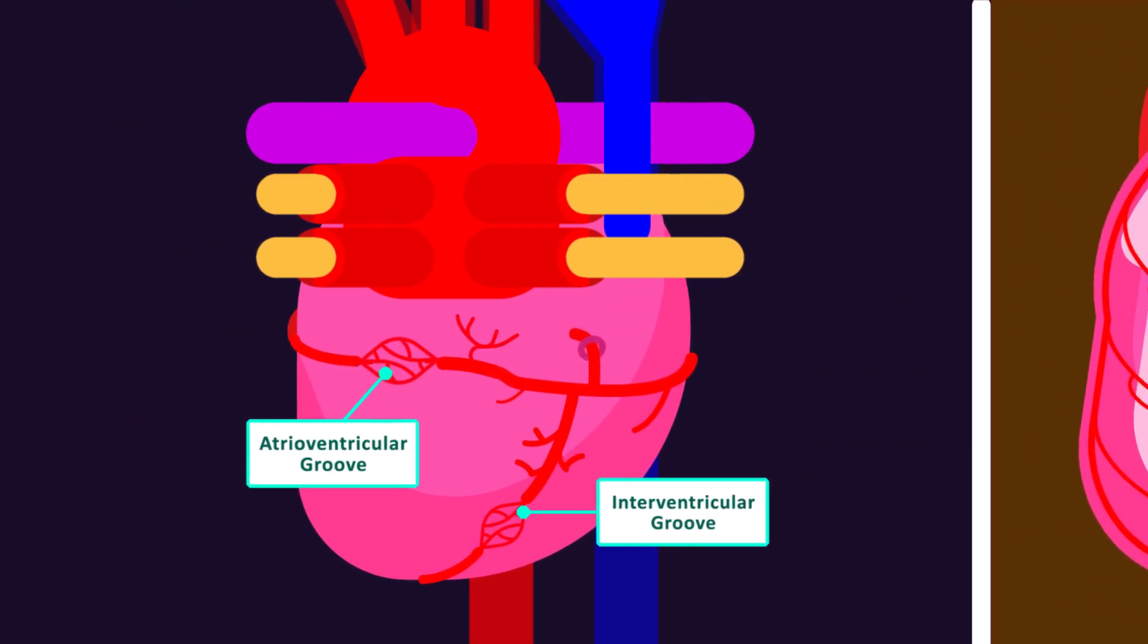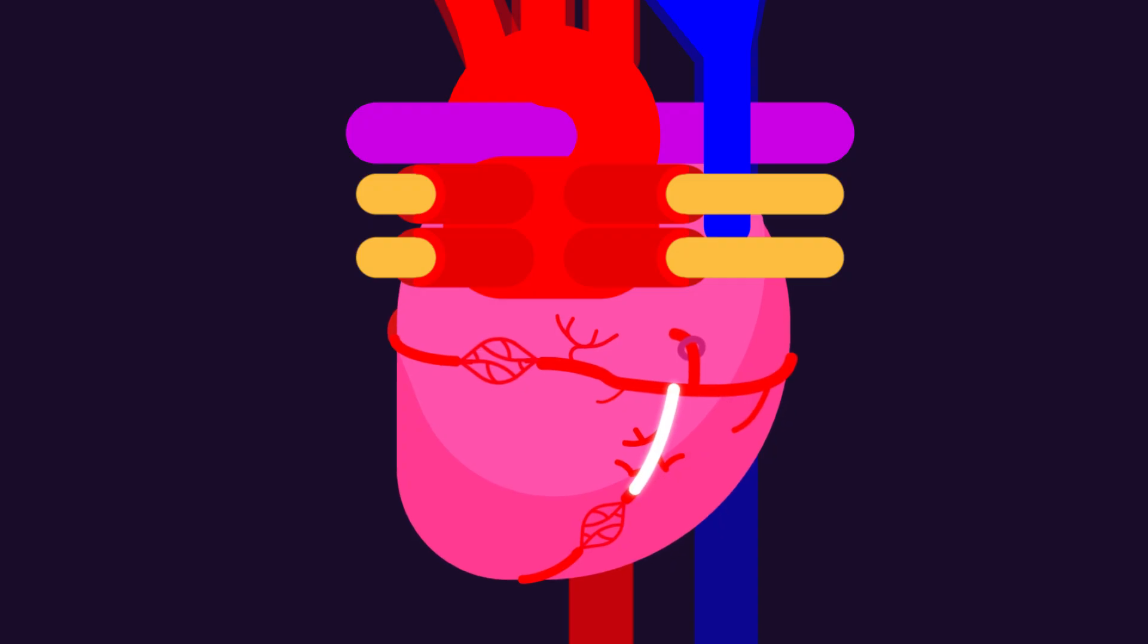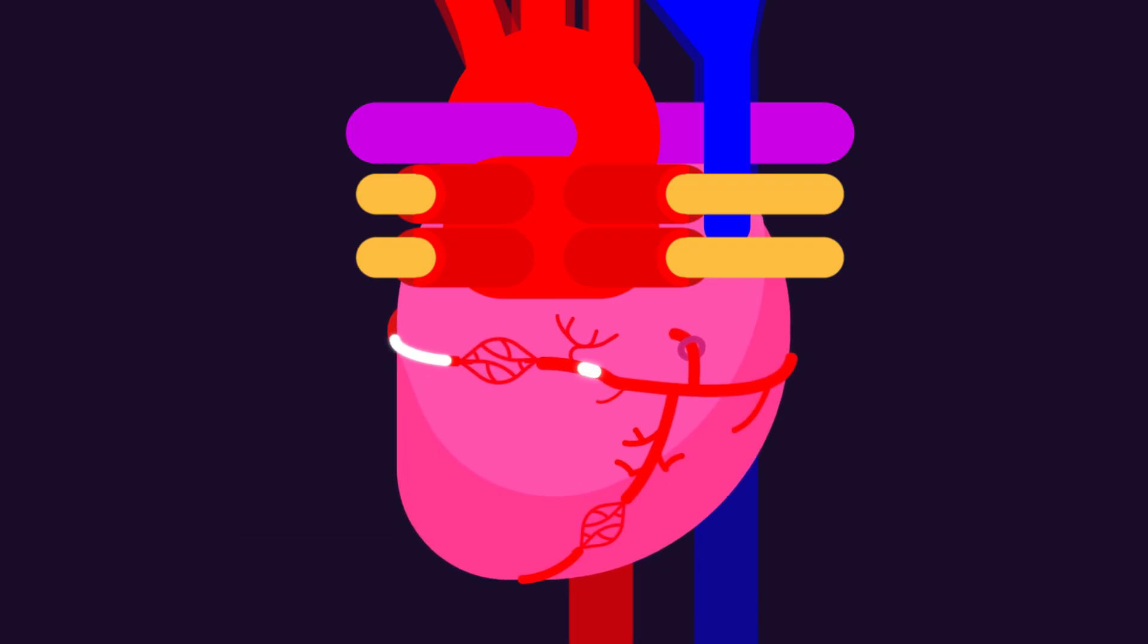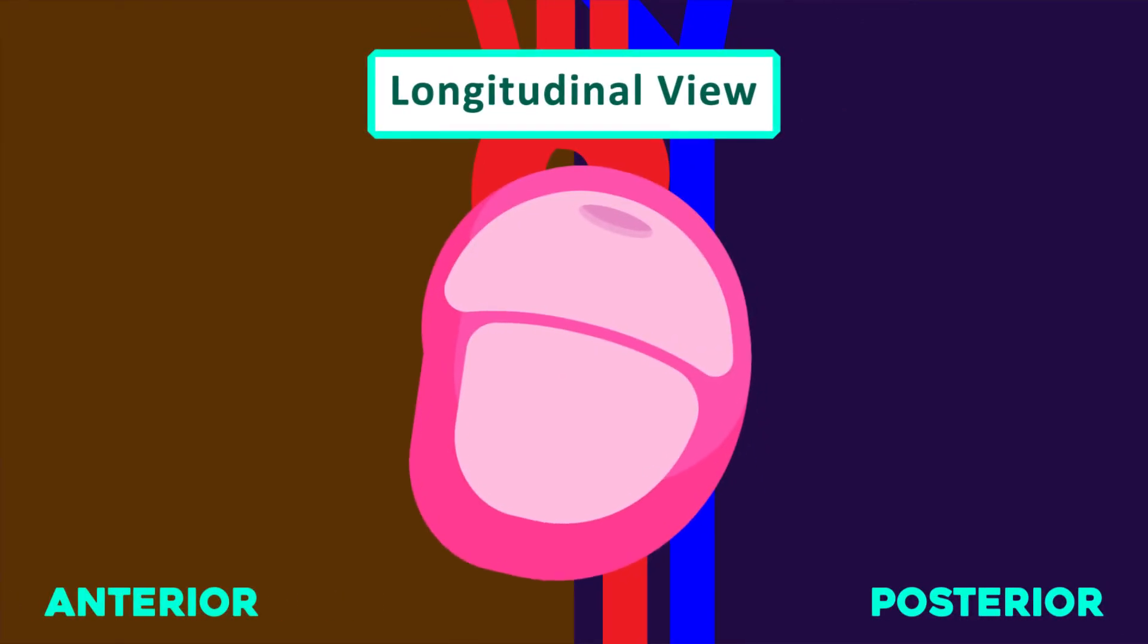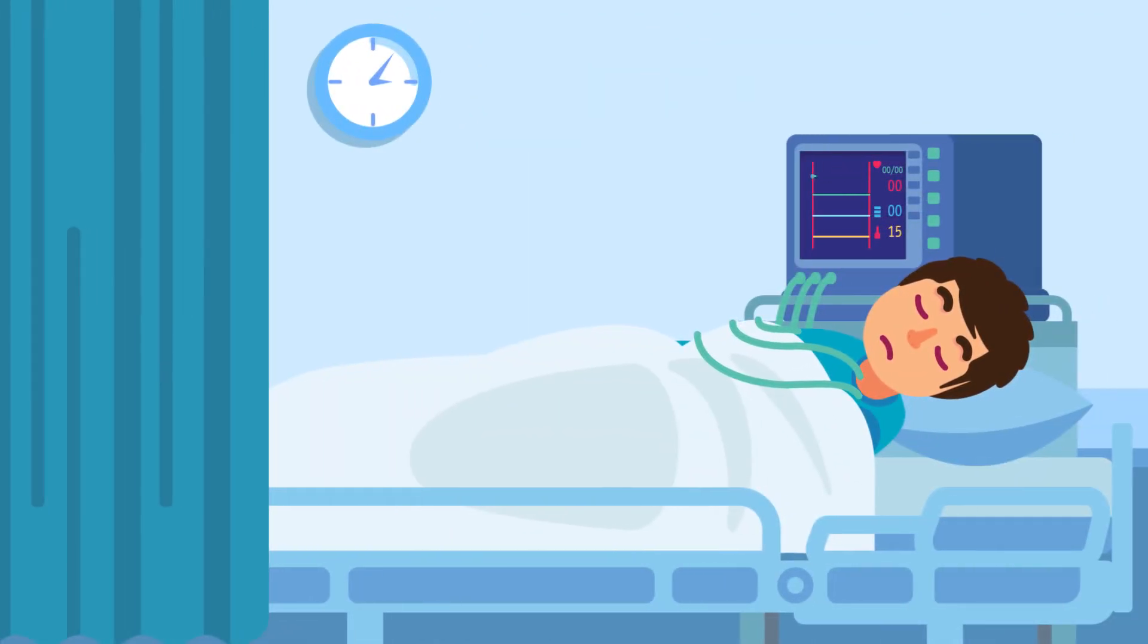Most commonly, three areas of anastomosis are seen in the heart. The branches of the posterior interventricular branch of the right coronary combined with the left anterior descending branch of the left coronary in the interventricular groove or sulcus. A bigger anastomosis is between the left circumflex artery, a branch of the left coronary artery, and the right coronary artery in the atrioventricular groove. Another anastomosis is seen between the septal branches of the two coronary arteries in the interventricular septum.